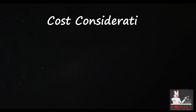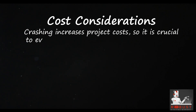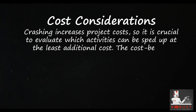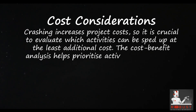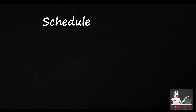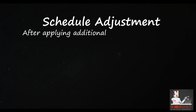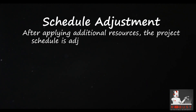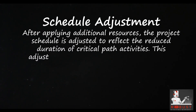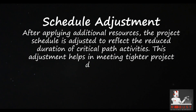Cost considerations: Crashing increases project costs, so it is crucial to evaluate which activities can be sped up at the least additional cost. A cost-benefit analysis helps prioritize activities for crashing. Schedule adjustment: After applying additional resources, the project schedule is adjusted to reflect the reduced duration of critical path activities, helping to meet tighter project deadlines.